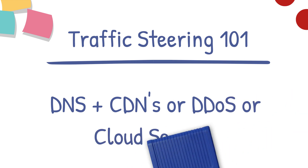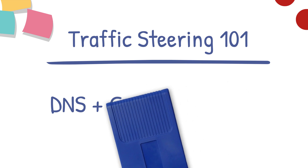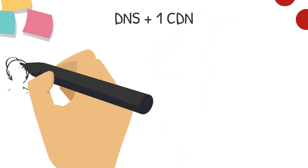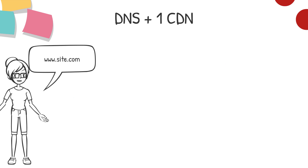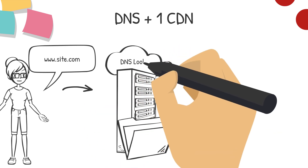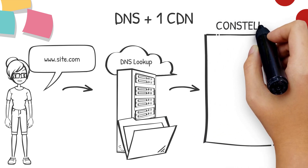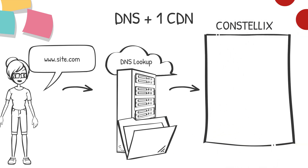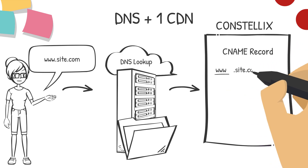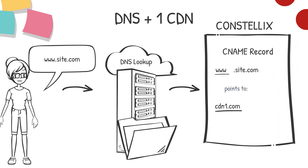First, let's run through a quick primer on how the DNS is used to manage traffic flow to a CDN provider. When a user wants to go to your site, they'll enter your domain into their browser. That initiates a DNS lookup that will end at the authoritative DNS provider — that's the company that hosts your DNS records, like Kostelix. Here we'll find a CNAME record that points www.site.com to a CDN URL.